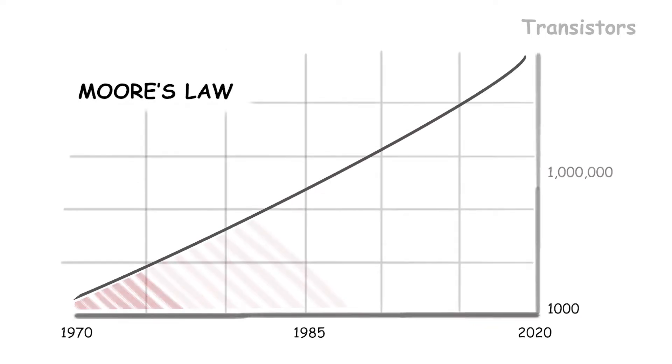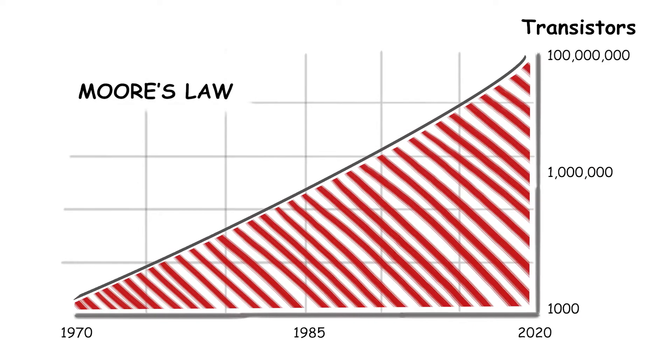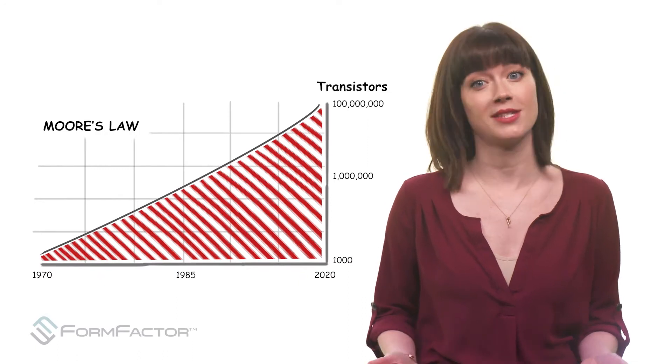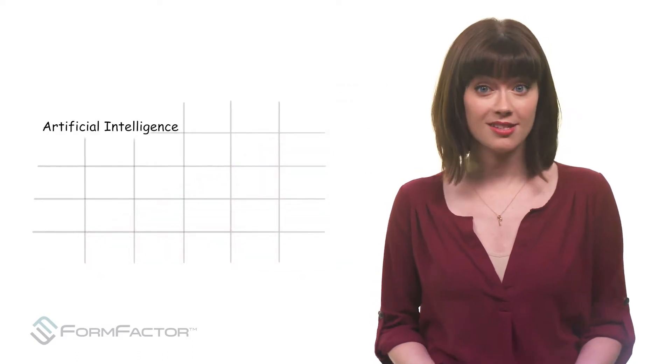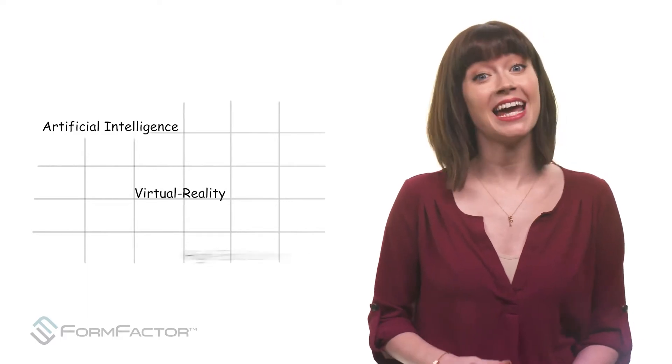Moore's Law predicts a doubling of transistors on a chip every two years. It means you'll see enormous gains in computing power for applications like artificial intelligence, virtual reality, and high-end server farms.